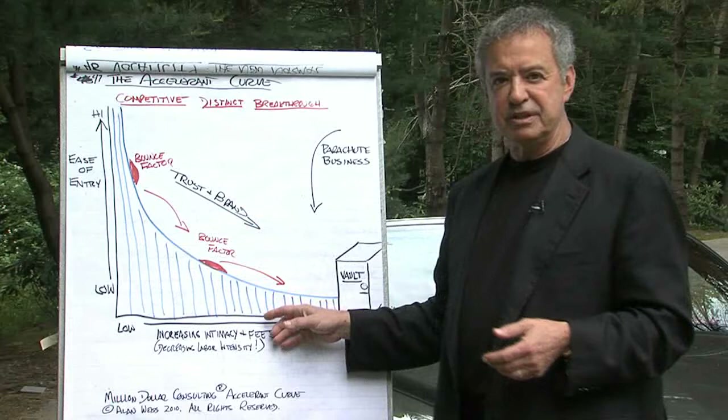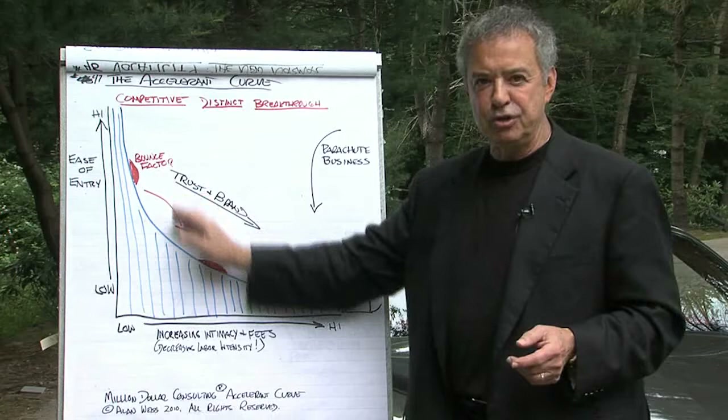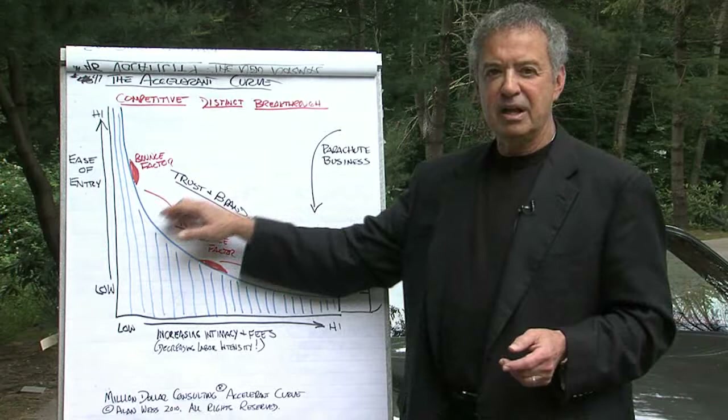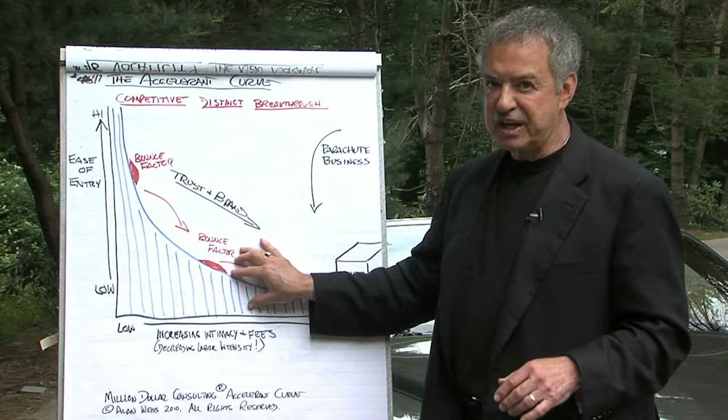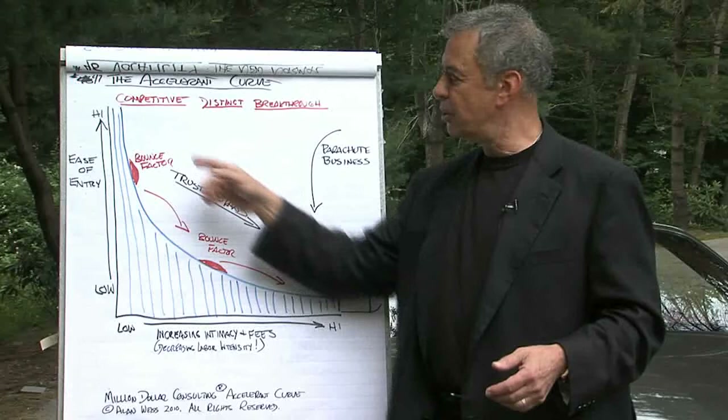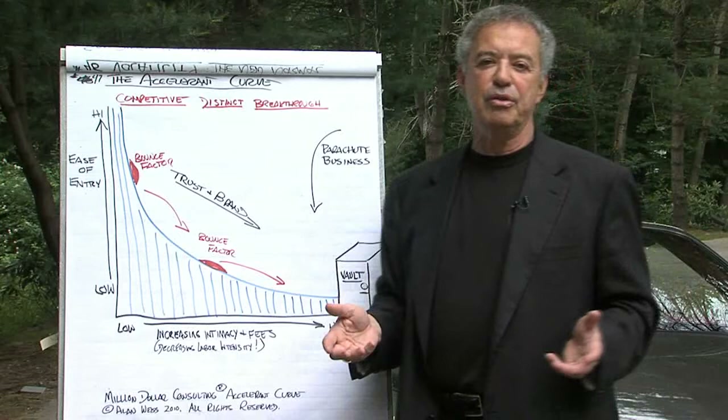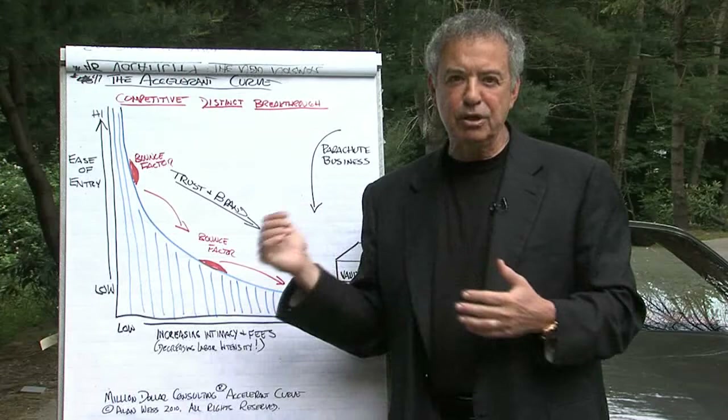So try to apply the accelerant curve to your business. What do you have that creates ease of entry to work with you? How do you propel people down the curve? Do you have enough offerings that are competitive, distinct, and breakthrough? Do you have bounce factors that prompt them further down the curve? Are you building trust and brand? And do you get parachute business as a result? As you're successful, it tends to move from left to right — these become more valuable, and these become so uniquely yours that you'll own the niche. I give that to you with my blessing.